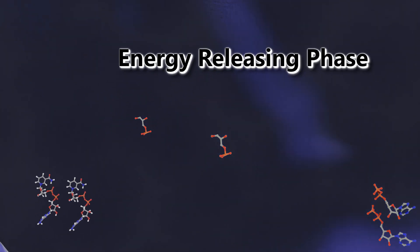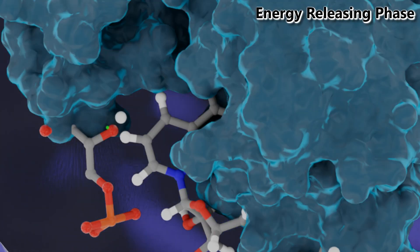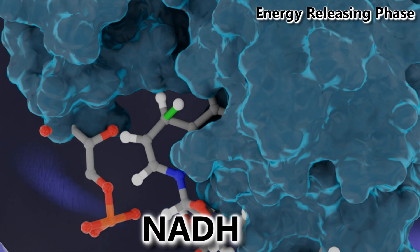The next half of the reaction is called the energy releasing phase. These two G3P molecules are going to release a hydrogen with some electrons that are going to be reducing the NAD molecule into NADH.